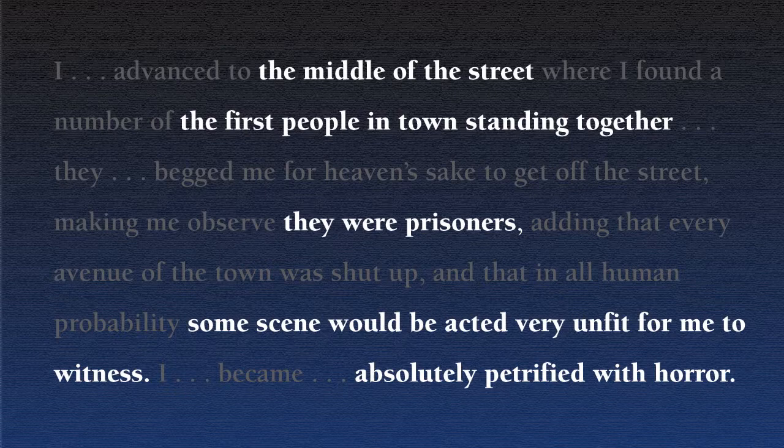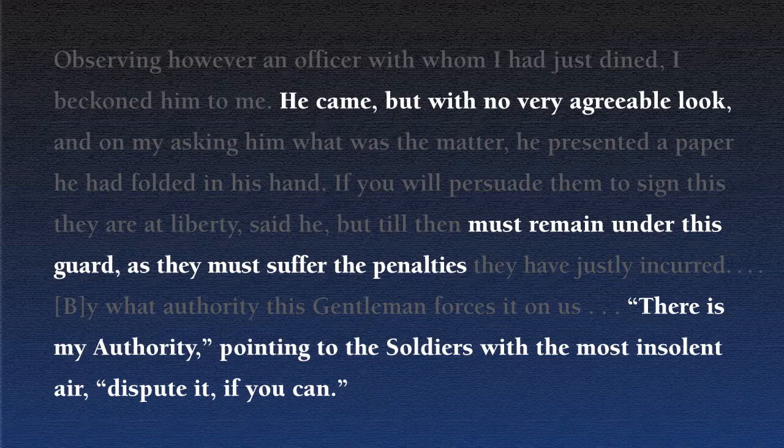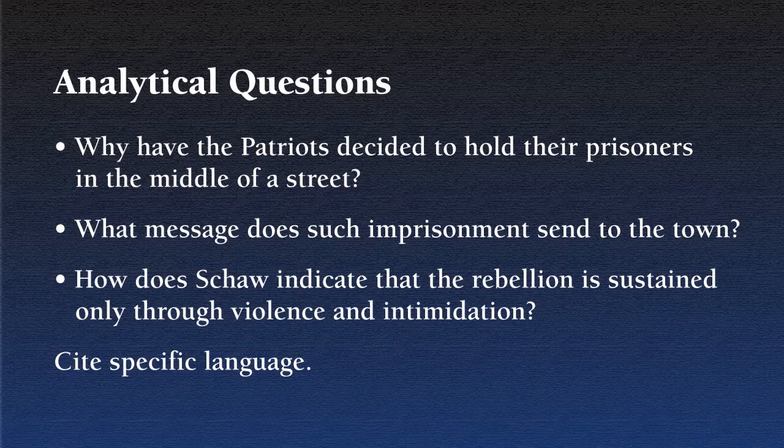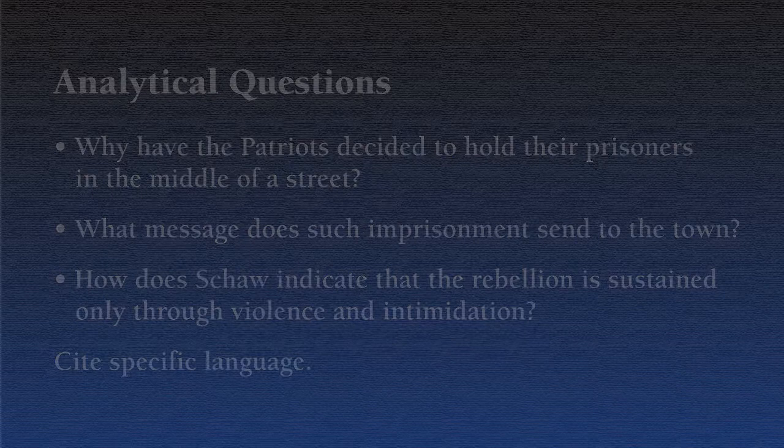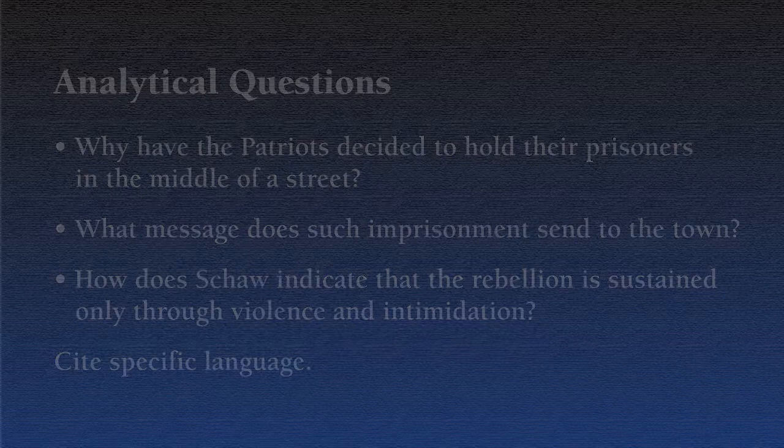When a prisoner asks by what authority they are being held, an officer, with whom Shaw recently dined, points to an armed soldier and replies, 'There's my authority — dispute it if you can.' As in our analysis of the first excerpt, we end by emphasizing the way the rebellion has divided the community of Wilmington. The action of the Patriot Militia has provoked a similar reaction on the part of the Loyalists — they have taken up arms to rescue their comrades. Wilmington is close to civil war. At the conclusion of your discussion of Janet Shaw's journal, ask your students if these passages have changed their image of the American Revolution and the people who waged it.